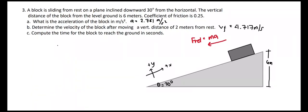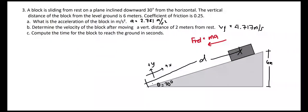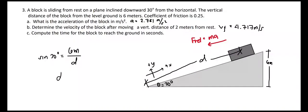For the last problem, to compute the time for the block to reach the ground in seconds, we first compute the total inclined distance from the starting position to the bottom. Let's call this distance d. Using the sine function, taking the ratio of the opposite side of 6 meters divided by the hypotenuse d: d equals 6 meters divided by sine of 30 degrees, which equals 12 meters.